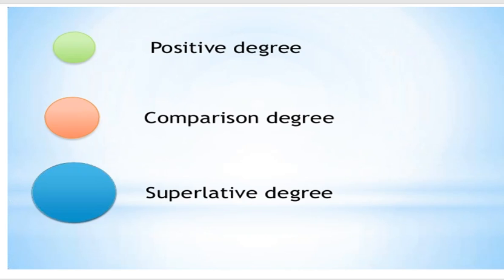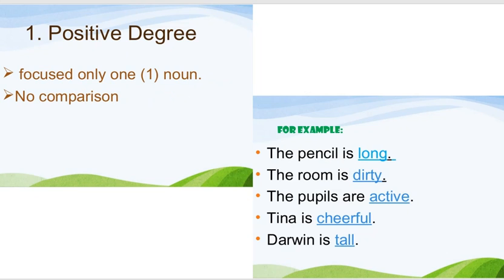Adi derece, müqayisə dərəcəsi və üstünlük dərəcəsi. Positive degree focuses only on one noun. There is no any comparison. Let's look at the examples. The pencil is long — 'long' is in the positive degree. The room is dirty. Burada heç bir müqayisə yoxdur.